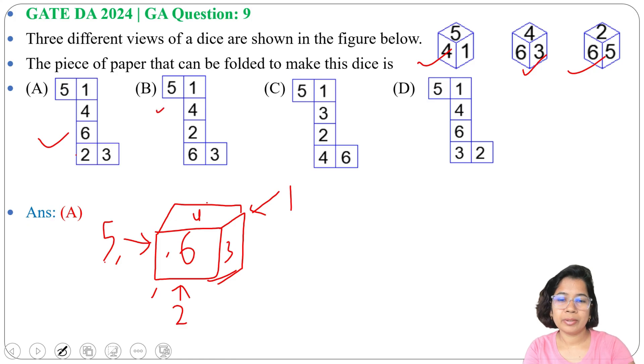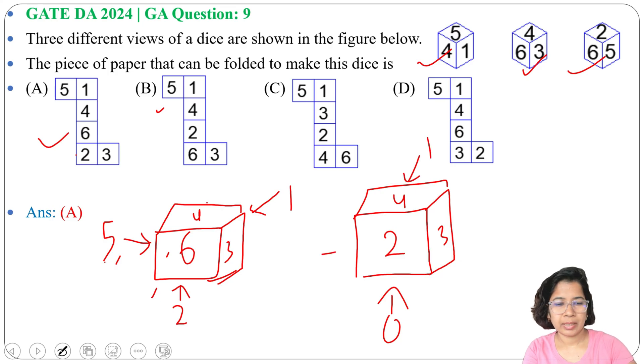Now option B. So let me fold it. Let front face is 2. So below face is 6.